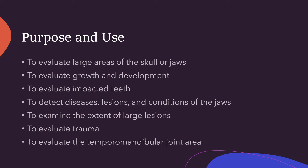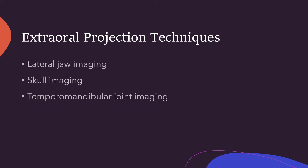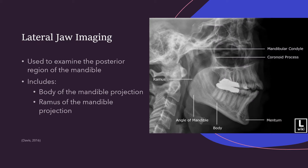The external projection techniques include lateral jaw imaging, skull imaging, and temporomandibular joint imaging. The lateral jaw imaging includes the body of the mandible projection and the ramus of the mandible projection. They're taken exactly the same way. One shows us the body of the mandible and the other focuses on just this area here, giving us the ramus of the mandible projection. It's used for the same purposes and we're looking to see if there are any issues with the jaw.